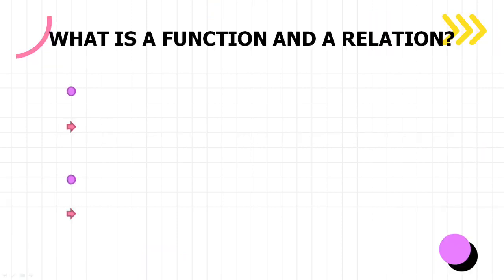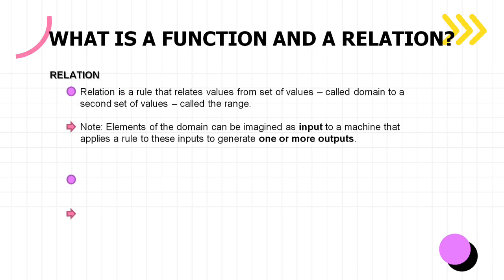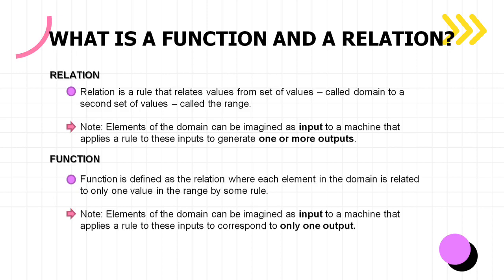First, what is a function and relation? A relation is a rule that relates values from a set of values called the domain to a second set of values called the range. The elements of the domain can be imagined as input to a machine that applies a rule to these inputs to generate one or more outputs. On the other hand, a function is defined as a relation where each element in the domain is related to only one value in the range by some rule, corresponding to only one output.